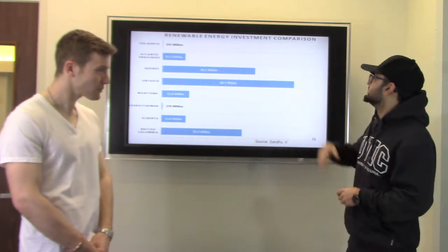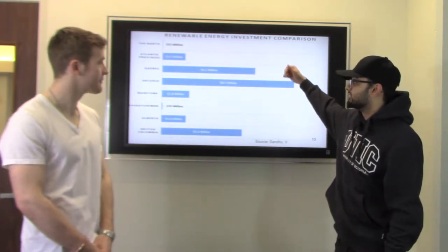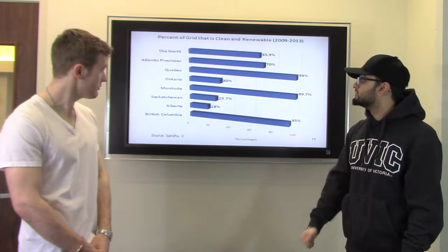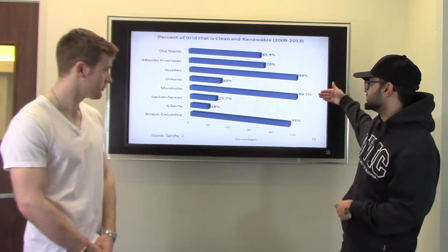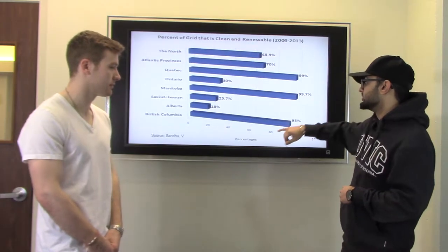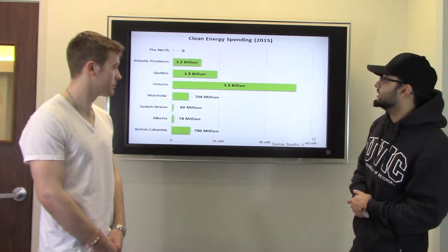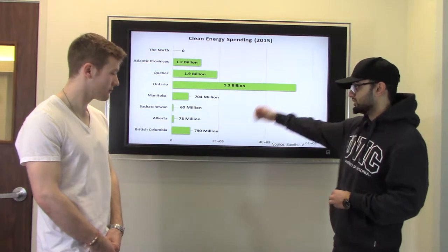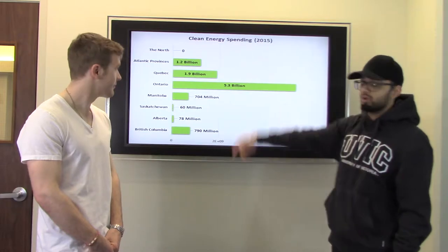For the renewable energy investment comparison, Ontario is leading with $8.7 billion, Quebec at $6.1 billion, and British Columbia at $5.3 billion. For the percent of the grid that is clean and renewable, Manitoba leads at 99.7%, Quebec at 99%, and British Columbia in third place at 95%. For clean energy spending, Ontario spends $5.3 billion, Quebec is in second at $1.9 billion, and British Columbia spends $790 million.